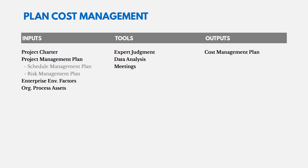We also have enterprise environmental factors and organizational process assets. The risk management plan might be important because it might include cost information — what risks may impact our project, positively or negatively, and their financial impacts. As we come up with our cost management plan, we could use expert judgment from those who have done similar projects, and then use data analysis and meetings to come up with ideas about how we're going to estimate and control our costs. The output is the cost management plan.